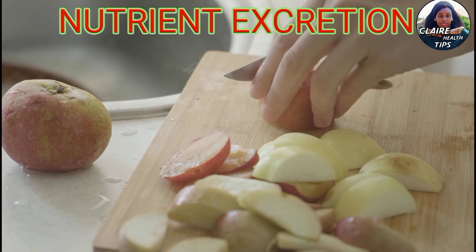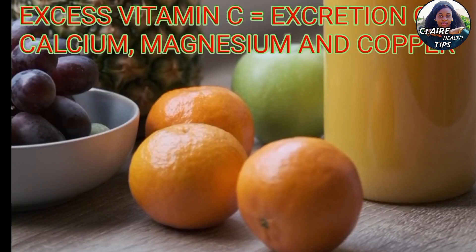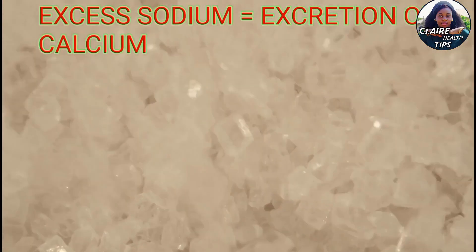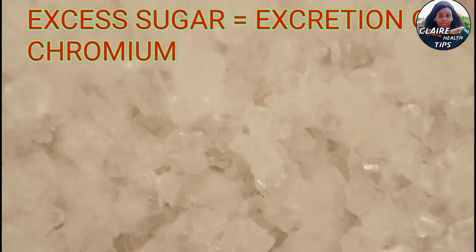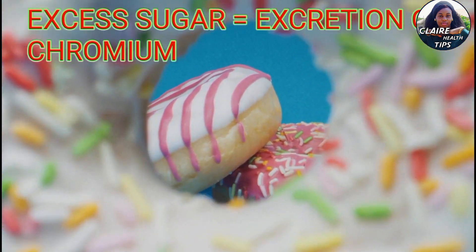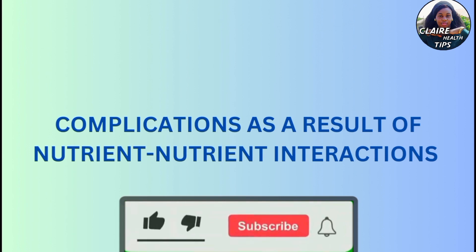Nutrient excretion: nutrients can also interact in the process of excretion. (a) Excess intake of vitamin C can increase the excretion of certain minerals such as calcium, magnesium, and copper. (b) High sodium intake can increase urinary calcium excretion. (c) Diets high in simple sugars increase the urinary excretion of chromium, robbing the body of the chromium it needs.